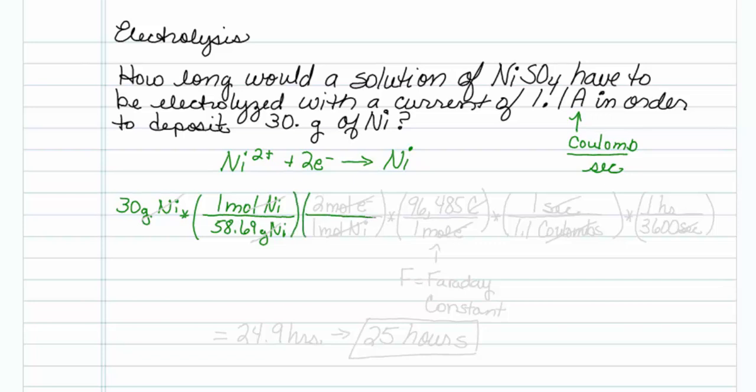Then I know from my balanced reaction here that for every one mole of nickel that I produce, I'm going to need two moles of electrons.